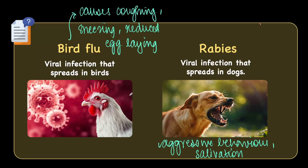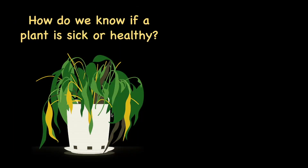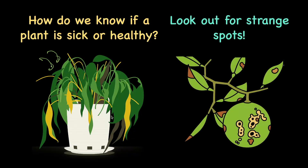So from this we can understand that animals tend to show very specific signs when they are sick. But what about plants? How do we know if a plant is healthy or sick? Now sometimes when we look at a plant which is drooping, we may think it is sick, but actually it is just dehydrated and we need to pour some water. But when you observe plants with strange spots, as you can see here, this is an indication that the plants are not healthy.